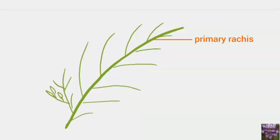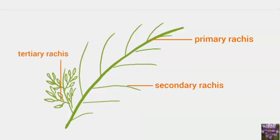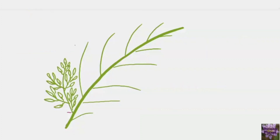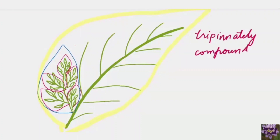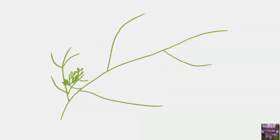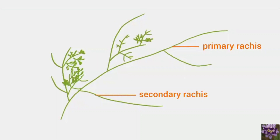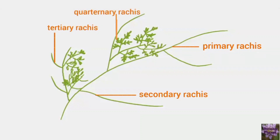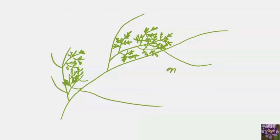In tripinnately compound leaves, there is a primary rachis, a secondary rachis, and a tertiary rachis. The main rachis gives rise to a secondary rachis, and the secondary rachis gives rise to a tertiary rachis. An example is Moringa. The fourth category is decompound leaves, which have four levels: the main rachis, secondary rachis, tertiary rachis, and then the tertiary rachis gives rise to a quaternary rachis bearing a number of leaflets. An example of such a compound leaf is coriander.